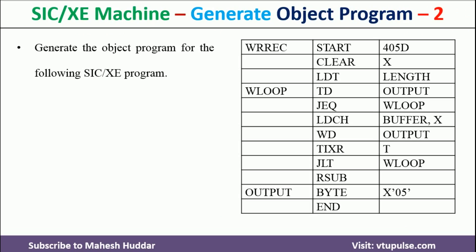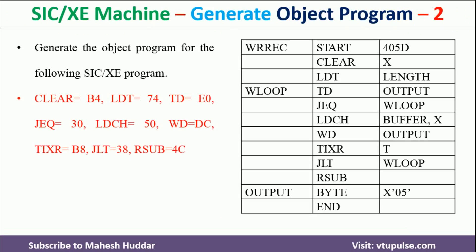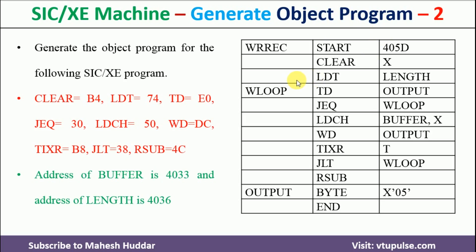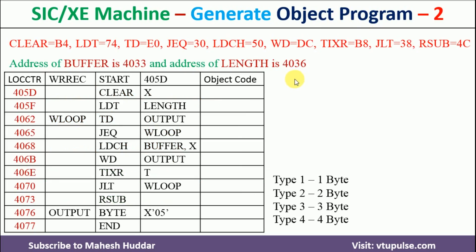This is the program given to us. Along with this particular program, for each of these opcodes, we have been given the mnemonic codes also. Considering these things, we have to calculate the object code first and then convert that object code into an object program. First we need to calculate the location counter and then calculate the object code, and after that we will convert this object code into an object program.